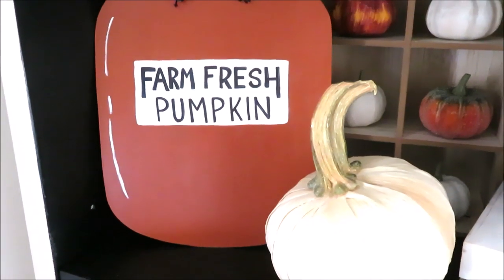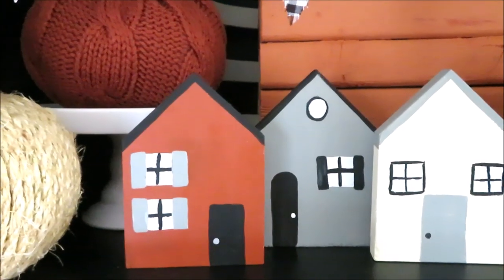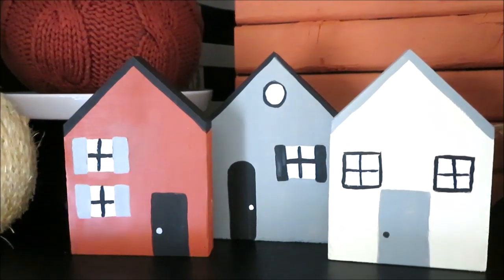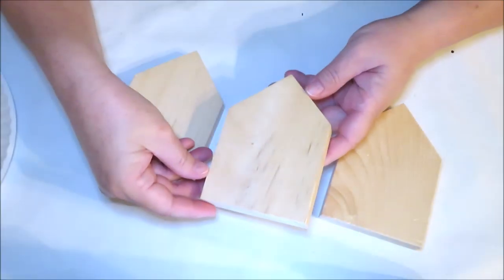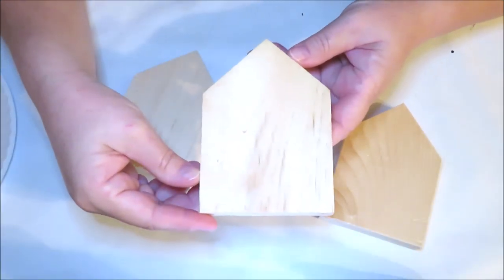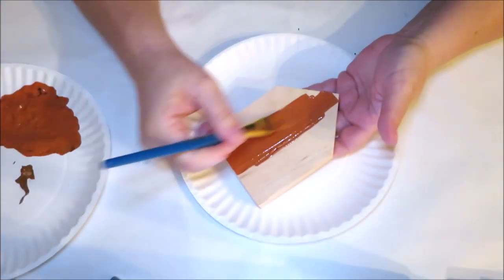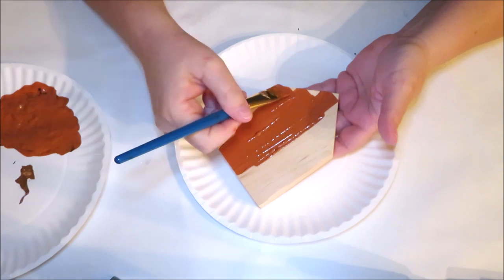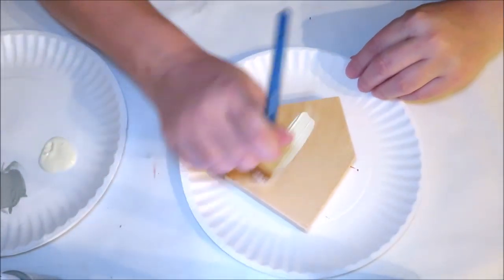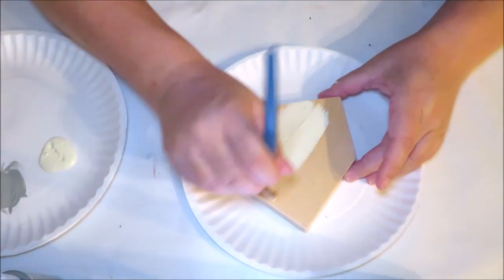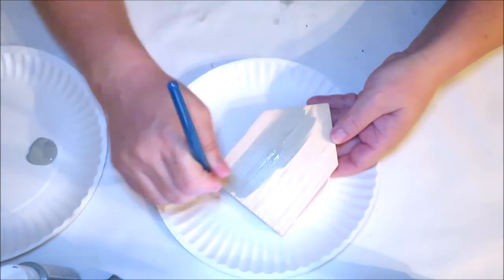First up, we're gonna work on our houses. So these little houses are something I've wanted to make for quite a while now. I picked them up in the dollar section at Michaels for just a dollar a piece. For my decor this year, I decided to paint one in a burnt orange color, one in a creamy antique white, and also one in gray.